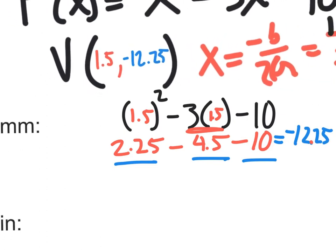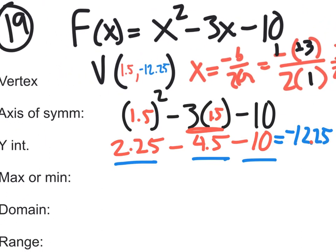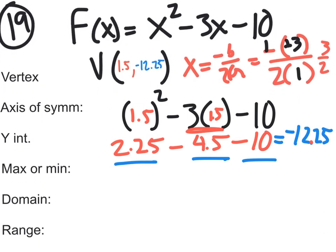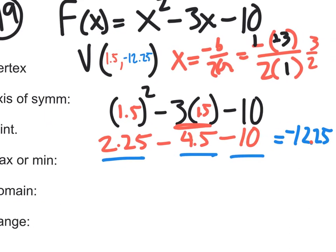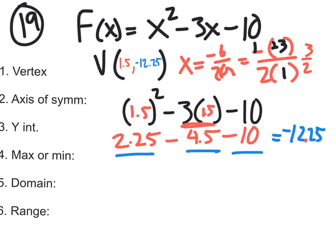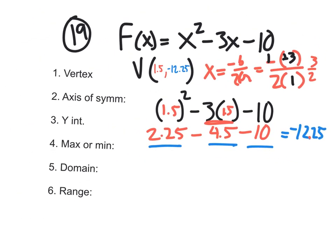Okay, so as ugly as that is, that's still, that's our ugly vertex. And I know you guys are thinking, oh, we got decimals, this is ugly. I'm going to give you at least one of these where you get ugly values, all right? I mean, it's still the same exact process. It's still the same exact thing. You just, you get one point for the vertex. This is it right there. 1.5, negative 12.25.